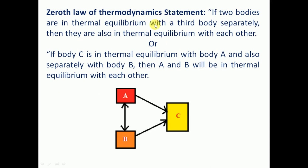Zeroth law of thermodynamics: one of the important laws of thermodynamics. Its statement: if two bodies are in thermal equilibrium with a third body separately, then they are also in thermal equilibrium with each other. That means if two bodies have the same temperature as the third body separately, then these two also have the same temperature. If body C is in thermal equilibrium with body A and separately with body B, then body A and B are also in thermal equilibrium with each other.